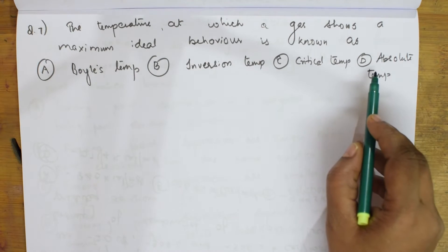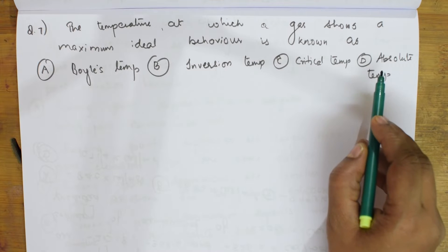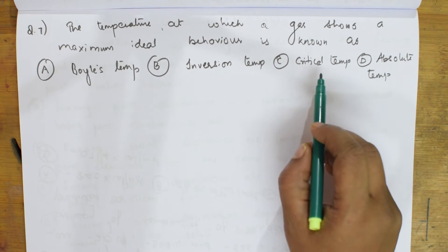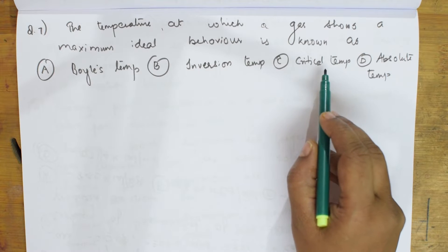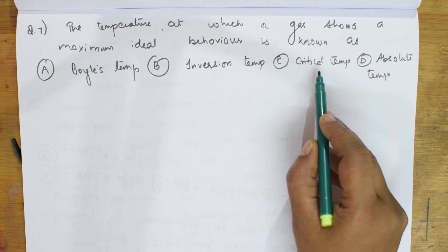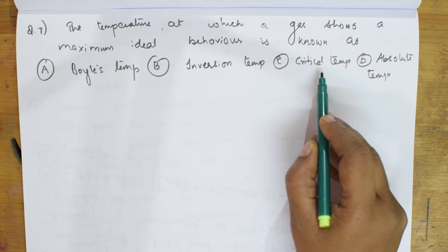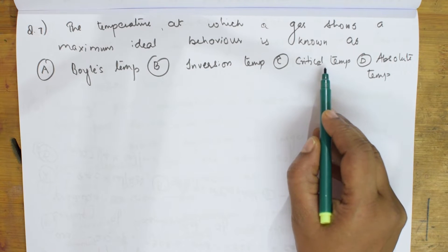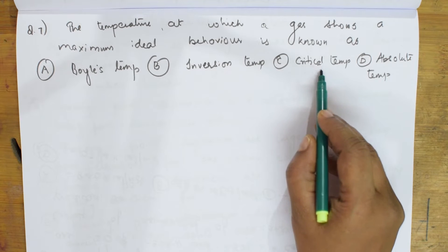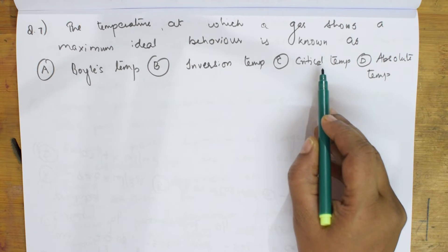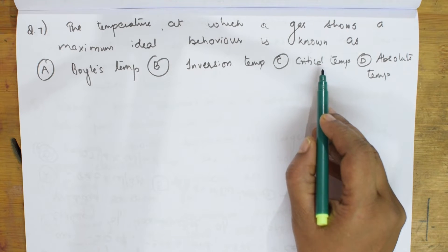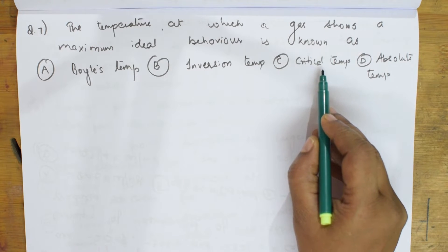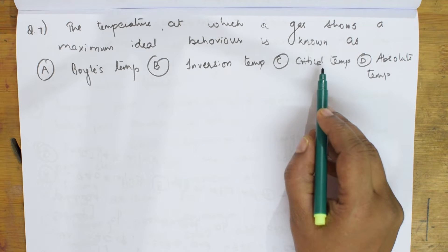That rules out absolute temperature — it's simply measured from absolute zero. Now, critical temperature: it's the temperature above which a gas cannot be liquefied by pressure alone. No matter what pressure we apply, we cannot liquefy the gas above the critical temperature.